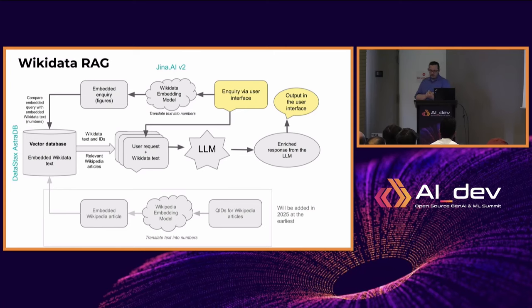We are working with Jina.ai, a Berlin-based company that provides open source models on Hugging Face and their own services. They're an embedding company — they've been at this for about four years, work in multilingual operations, and helped us build using their existing embeddings. We're going to be working together over the next year to build a specifically multilingual embedding for Wikidata, because Wikidata's text is in a format that makes sense to a graph but not always to a person.